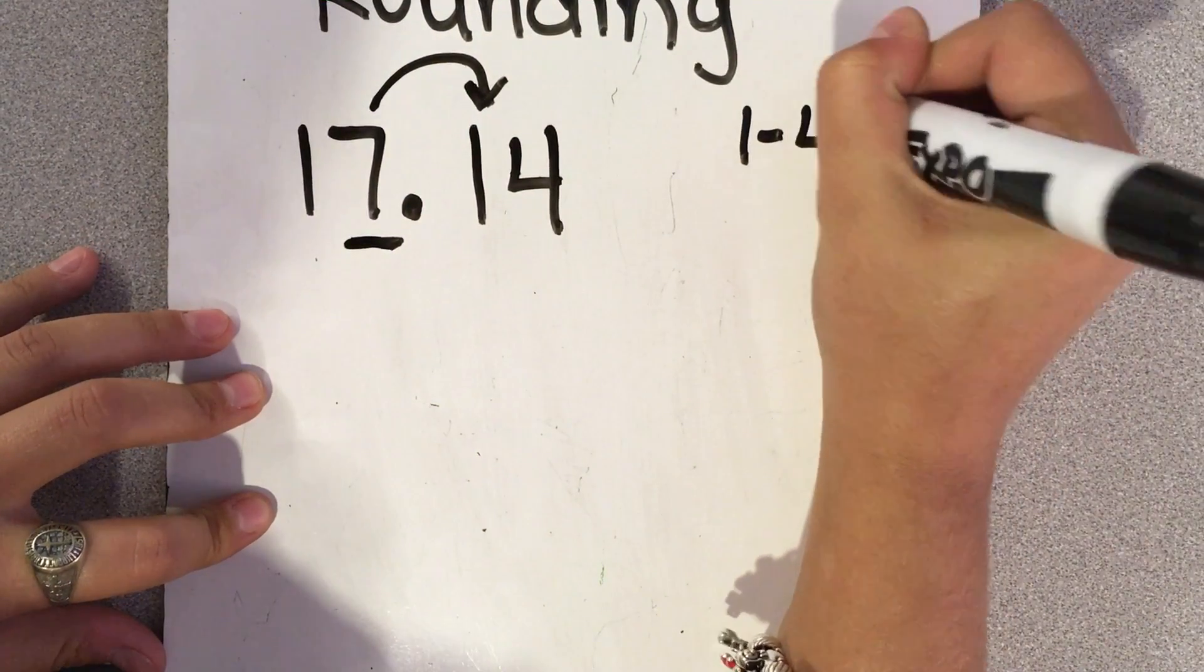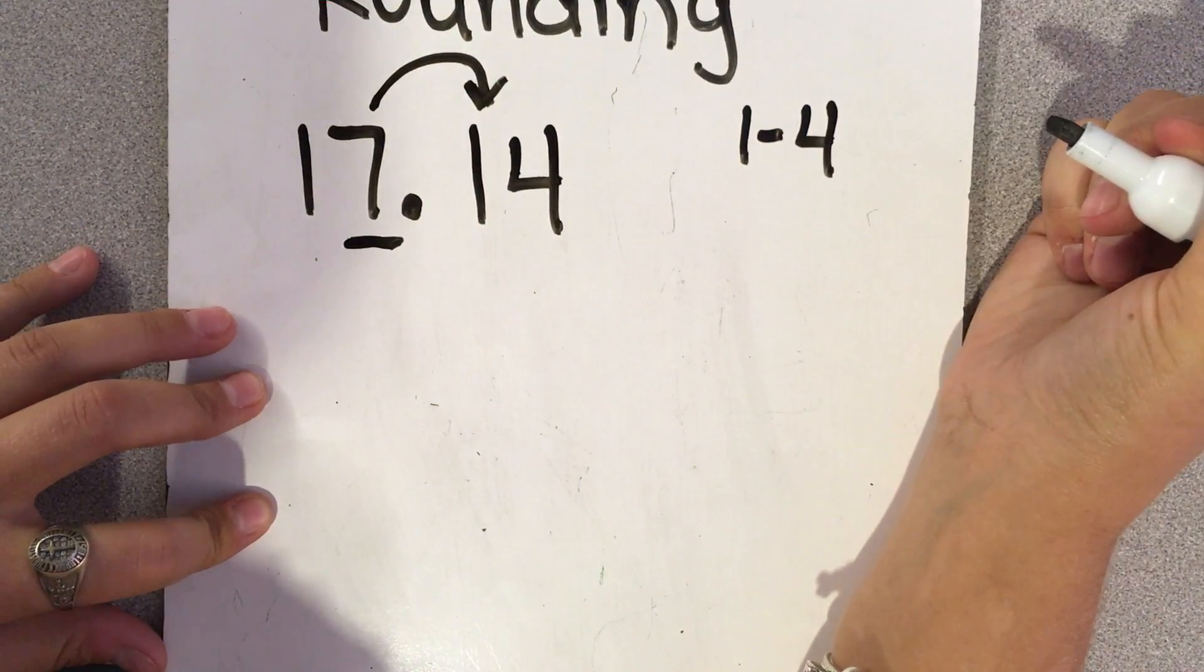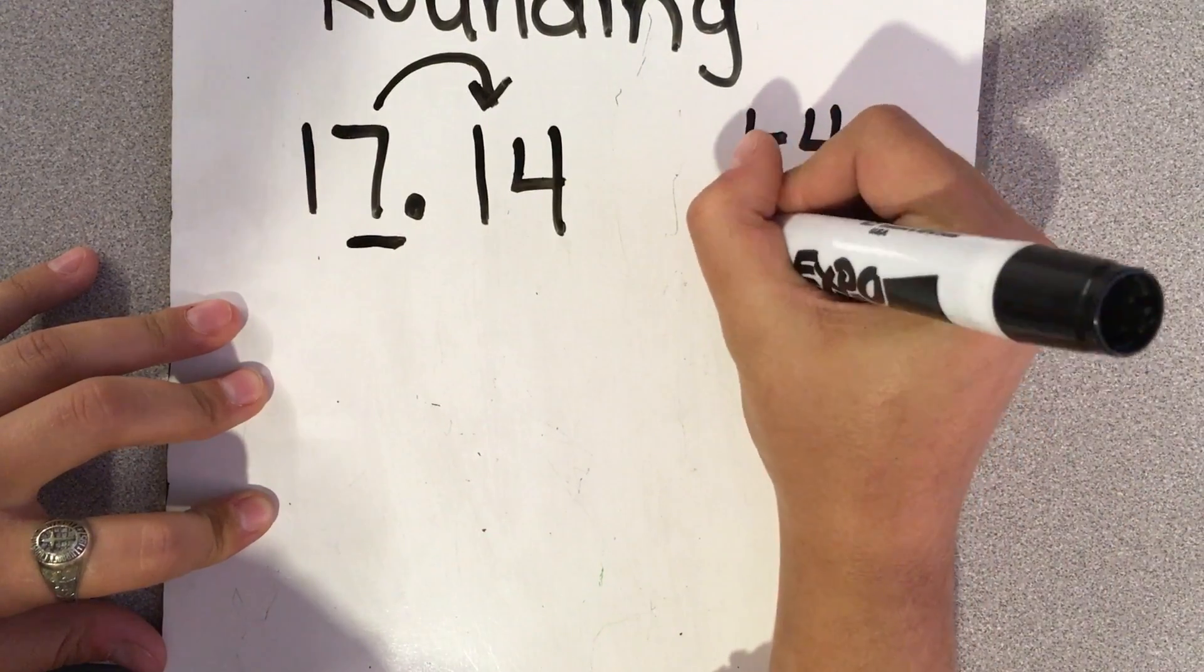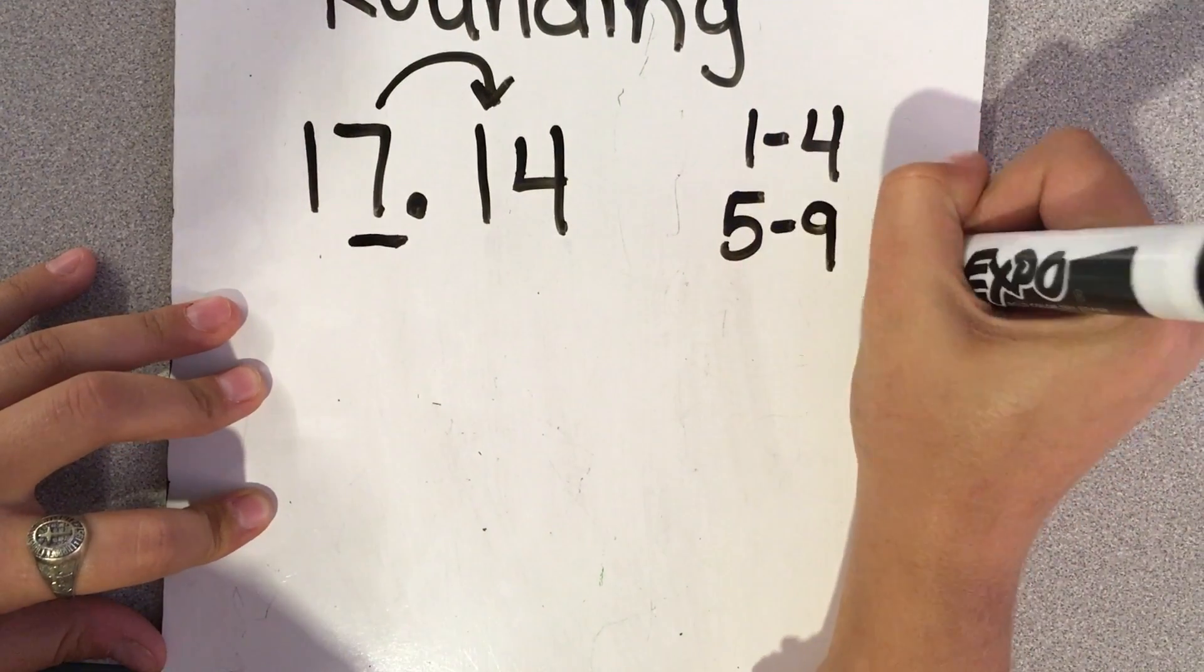So, of course, numbers 1 through 4, they tell you to stay, and then 5 through 9 tell you to raise.